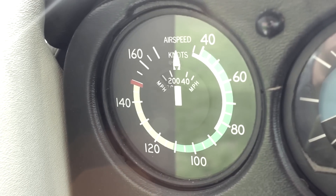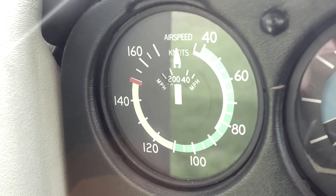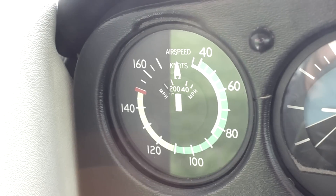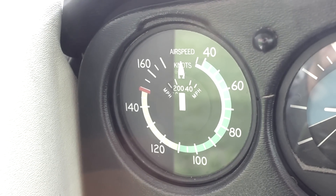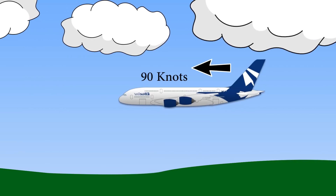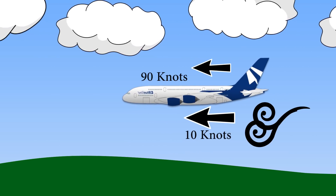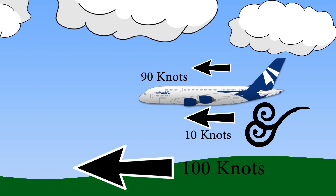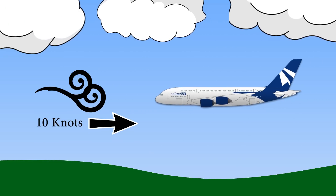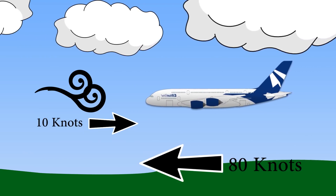Finally is the airspeed, which tells you how fast you are moving through the air. This is not necessarily the same thing as how fast you are moving on the ground, because this includes the wind. So if you are in the air going 90 knots and a 10 knot wind is coming from behind you, your speed on the ground would be 100 knots. On the other hand, if the same wind is in front of you, your ground speed would be 80 knots.